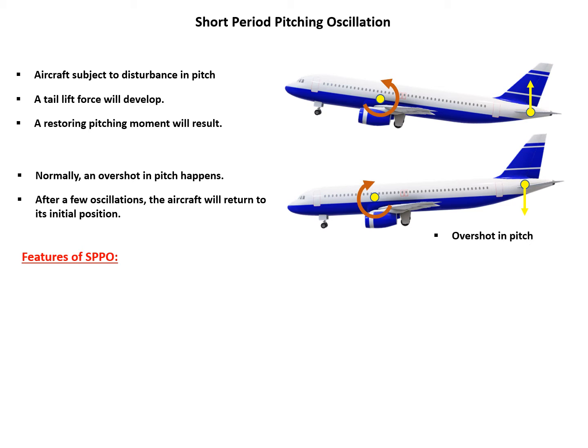Now let's look at the features of short-period pitching oscillation or SPPO. So SPPO is a powerful but heavily damped mode. And a typical completion time of SPPO for the Boeing 747, which is a large passenger aircraft, is about five seconds.